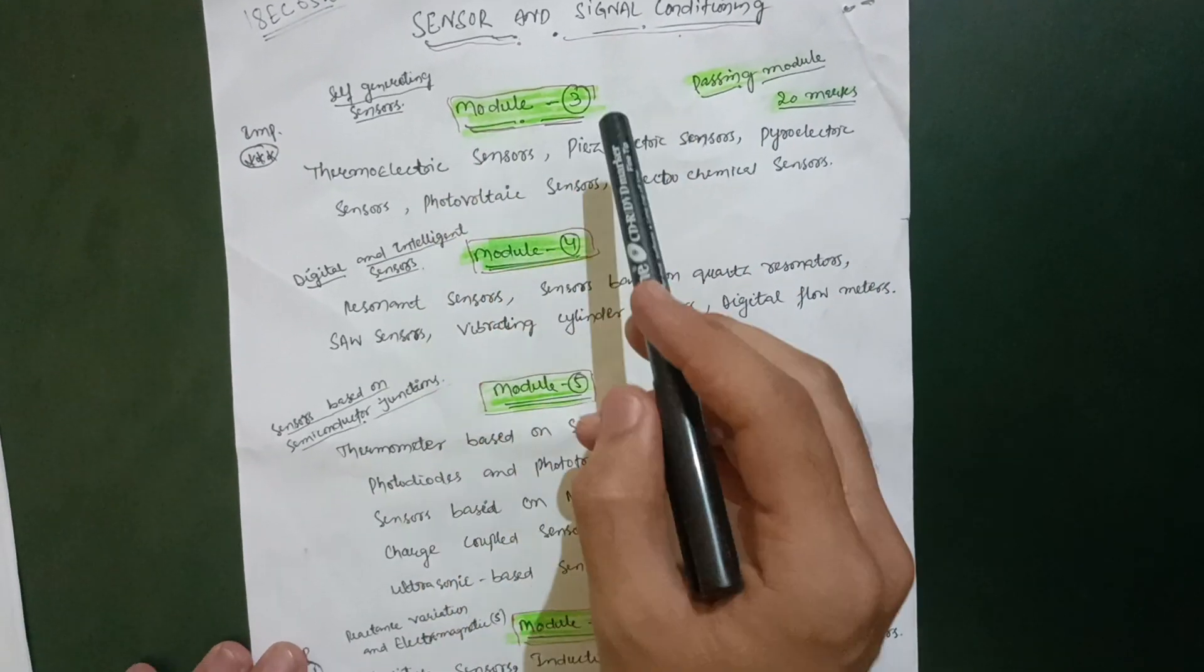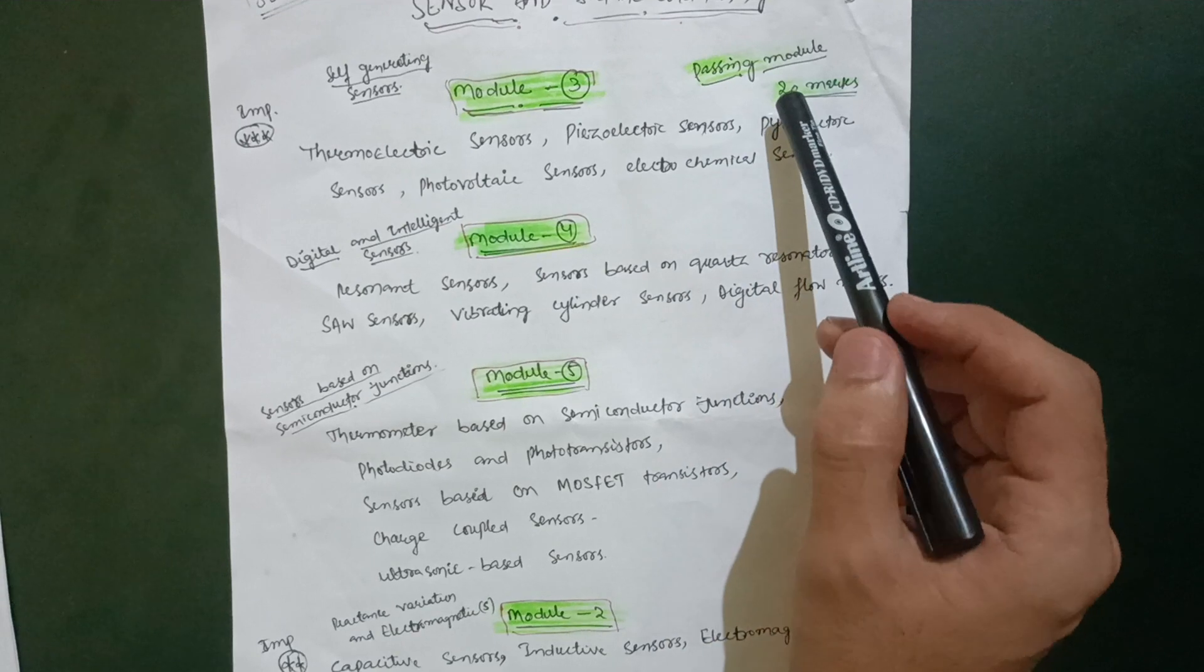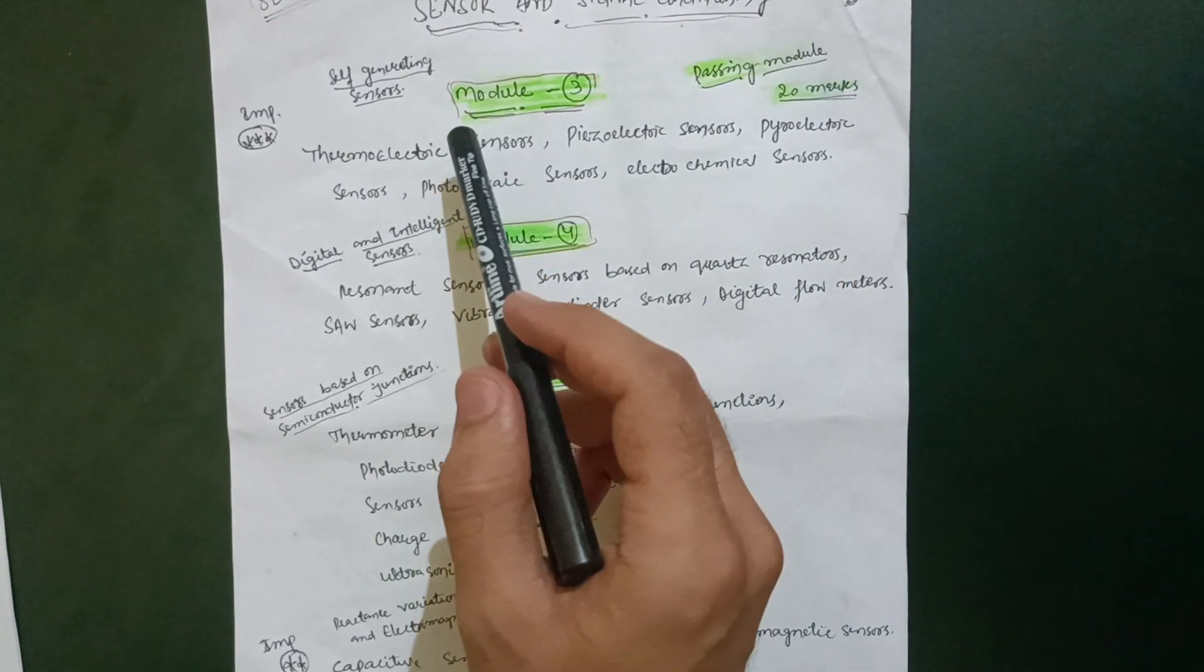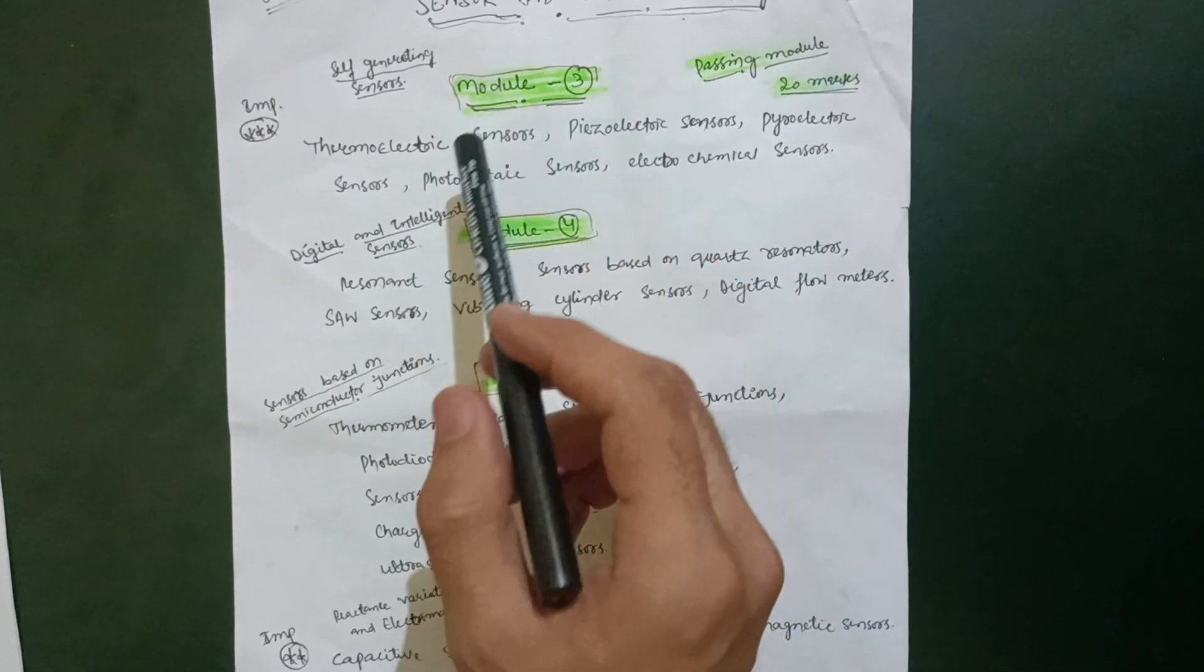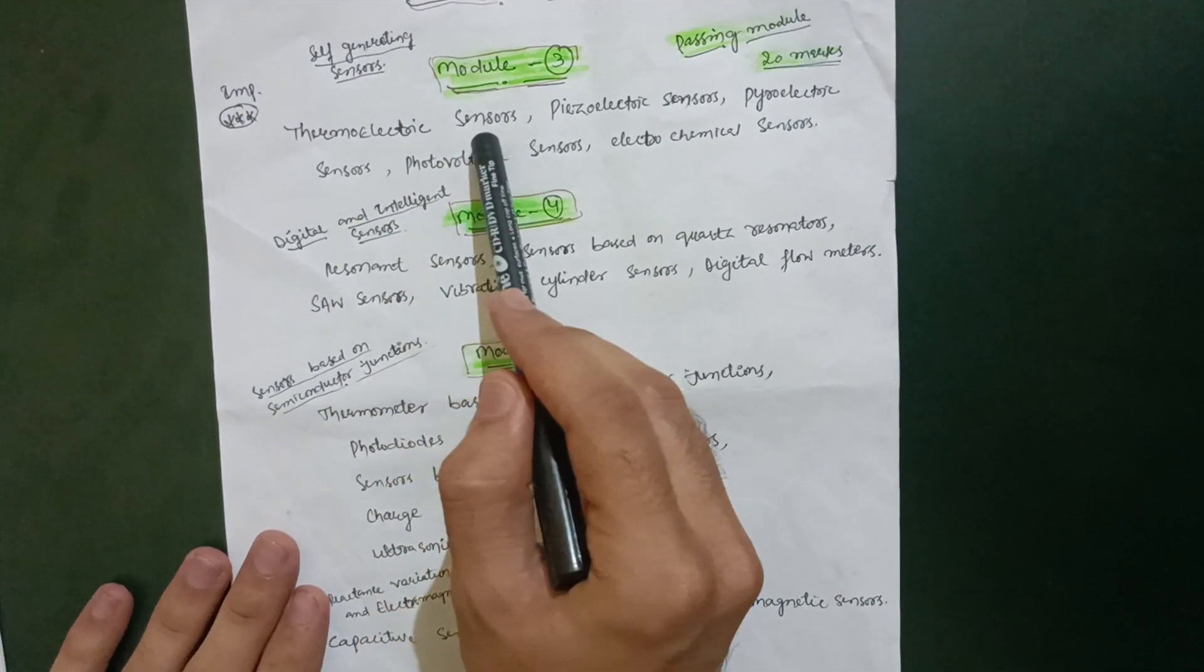First of all, just go through Module 3. It is the passing module - you can easily score 20 marks in this particular module. Let me discuss some topics in this module. Only five topics are there. First one is thermoelectric sensors.